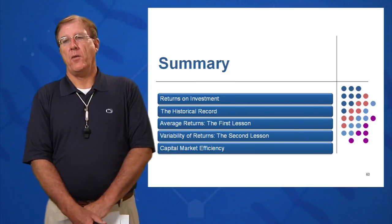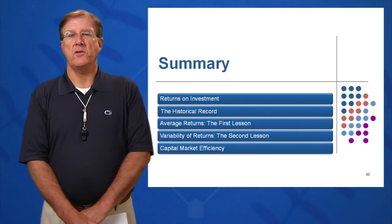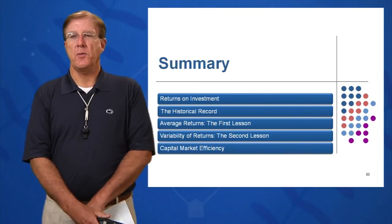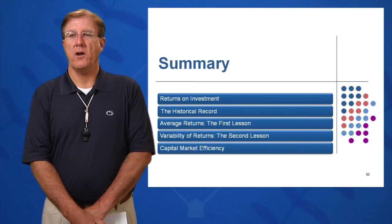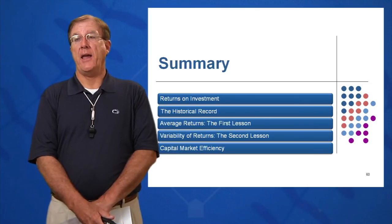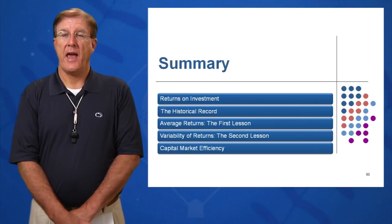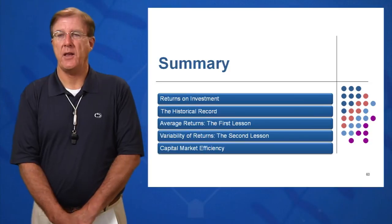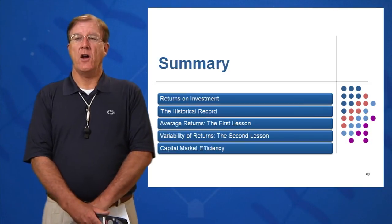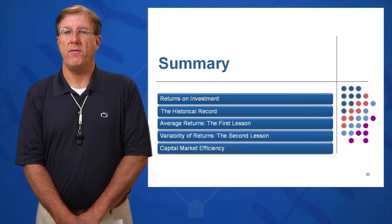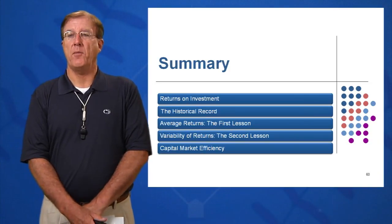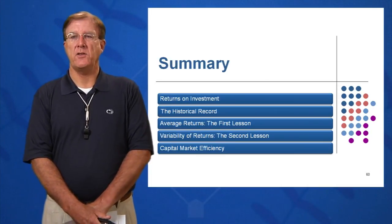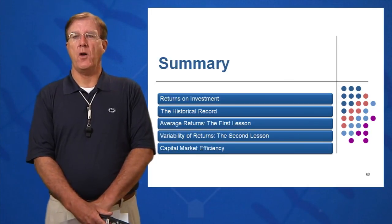Average returns — what are average returns and how do you calculate them? You simply take the historical instrument returns and divide by N years, giving us the averages and showing which investments have done the best over the last 80-plus years. How these returns can vary was the topic of learning objective number four: how to calculate the variability, the variance and the standard deviation, and what all that means.